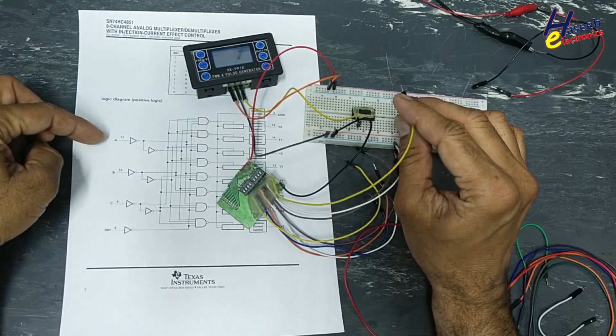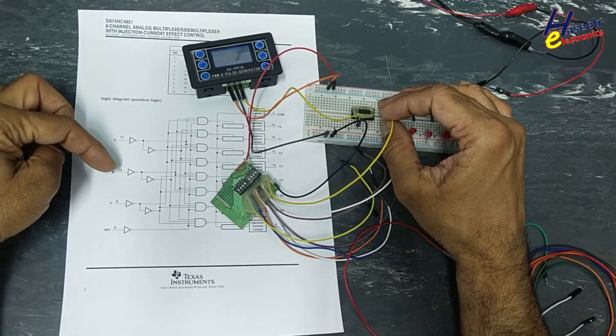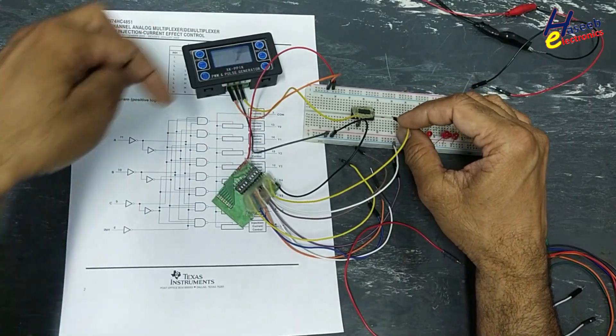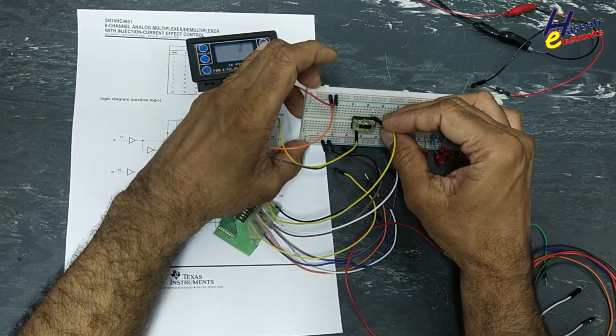This is A input. A is control signal, pin number 11. Pin 10, 9. A, B, C: pins 9, 10, 11.